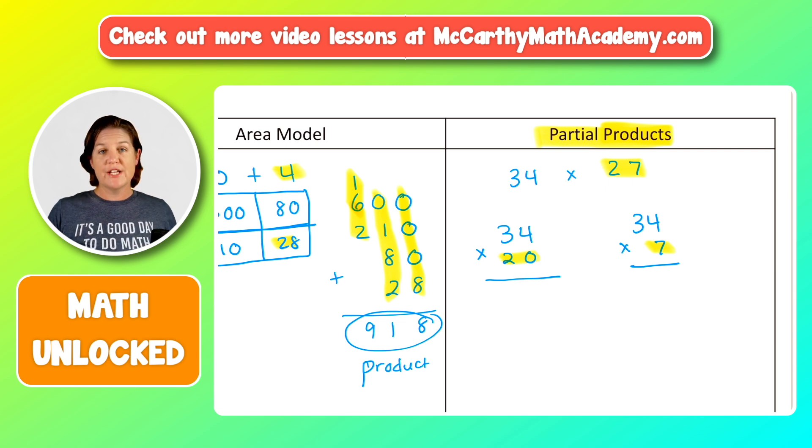We know for 34 times 20 that we have, we're going to have a zero in that ones place, right? Because we've got a zero right here. So then we're going to move over to, and everything, zero times four is going to be zero, zero times the three is going to be zero. So we can just move on over and say there's a zero there. So now we're going to multiply two tens times four. So that would be two, four, six, eight, eight. Or 80.